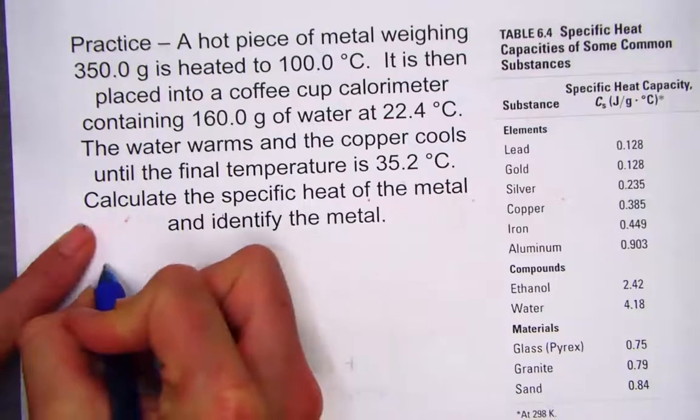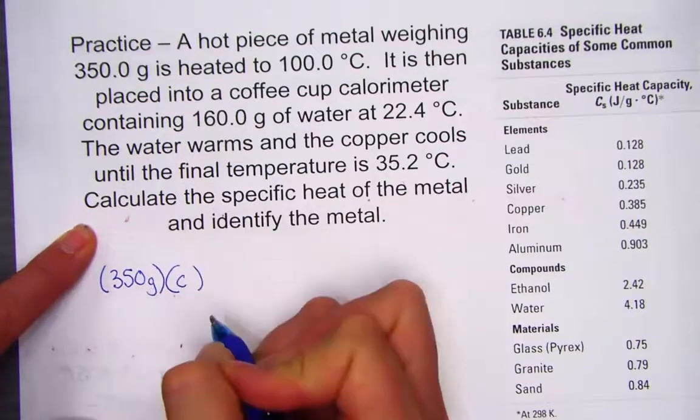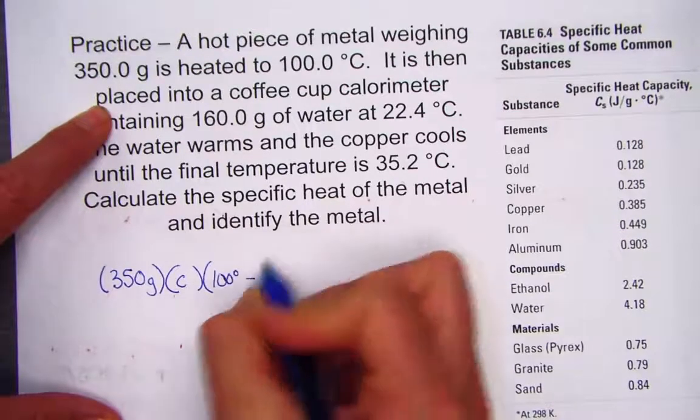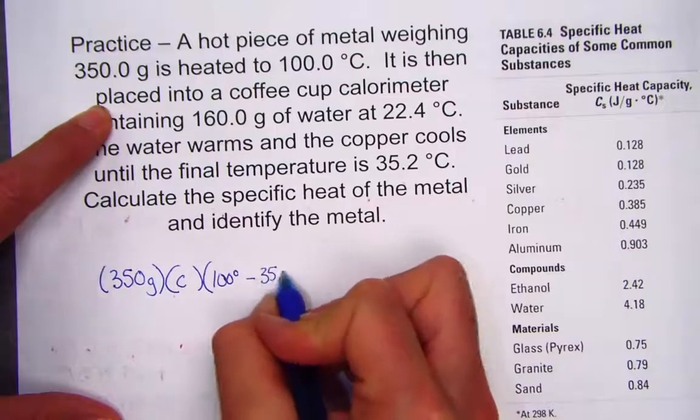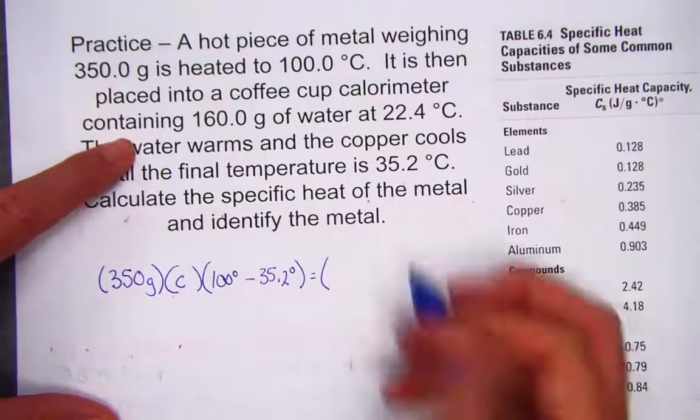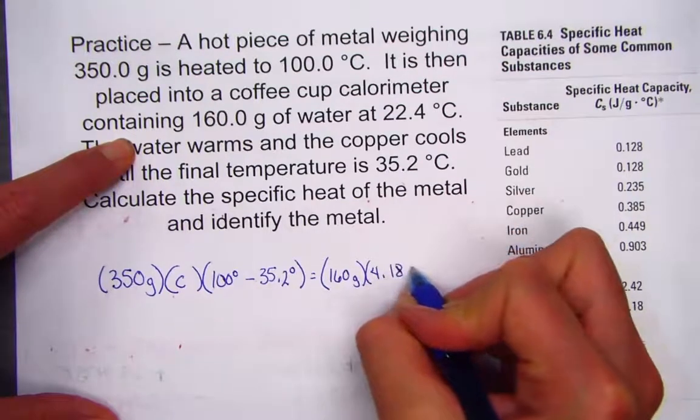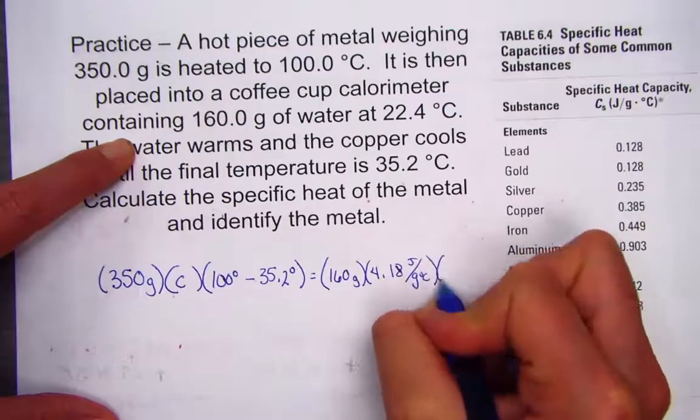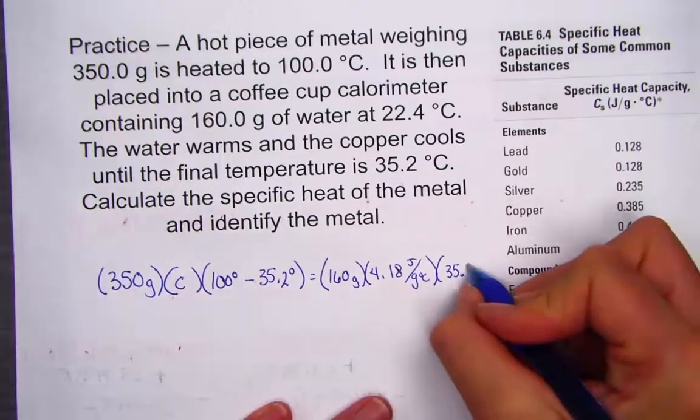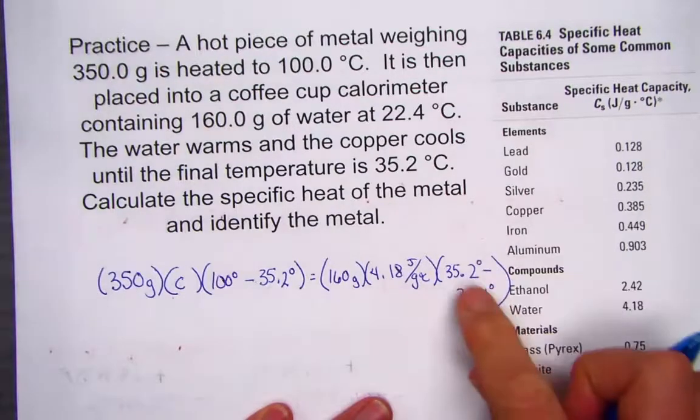So here's what we know. The metal weighed 350 grams. We don't know its identity, so we're really solving for the specific heat constant. Its initial temperature was 100 degrees and it cooled to 35.2. On the other side of our equation, the water weighed 160 grams. The heat constant for water is 4.18 joules per gram degrees Celsius. The change in temperature for water would be represented by 35.2 minus 22.4 degrees Celsius. Final minus initial.